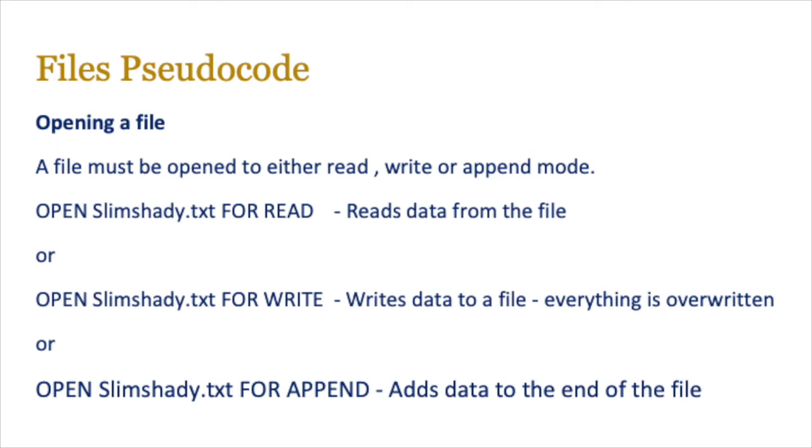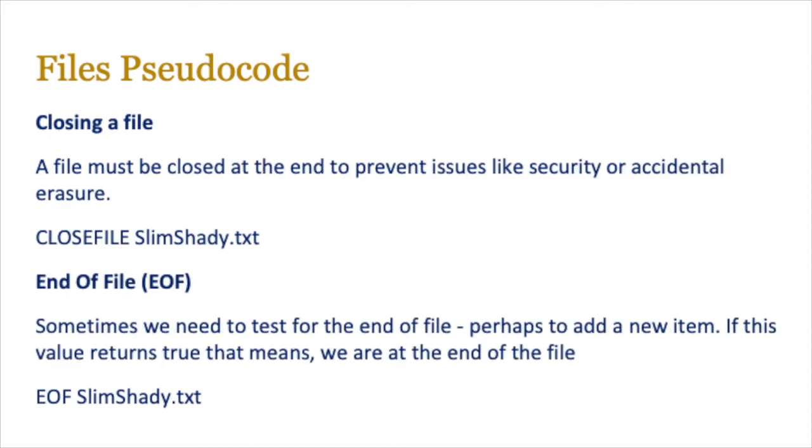So depending on your use, you can choose one of these three. That's all you need to know for AS level code. Now just remember that when you open a file, you need to also close it because if you don't close a file, then you can have issues like security issues or accidentally erasing it. The file is open and anyone can get in. So the command to close a file in pseudocode is simply CLOSEFILE in uppercase, and you just write the name of the file you want to close afterwards. So pretty straightforward.